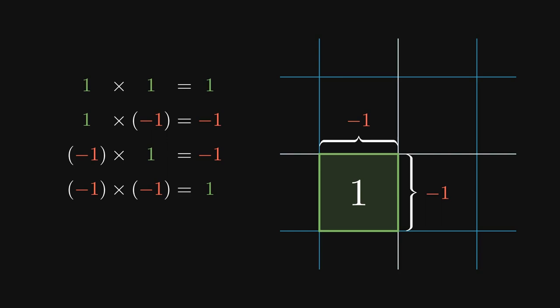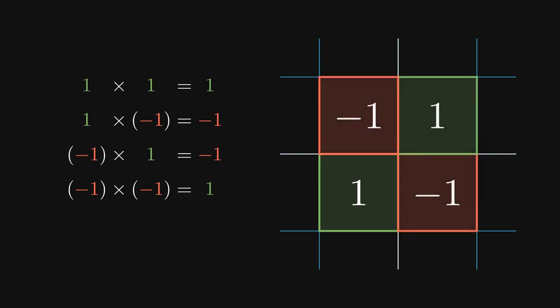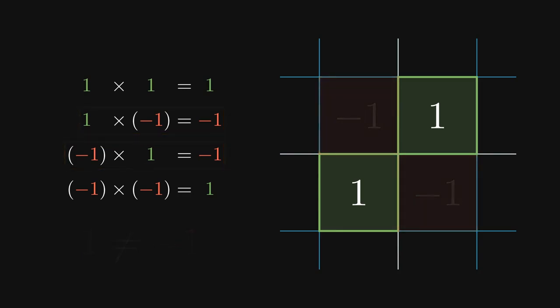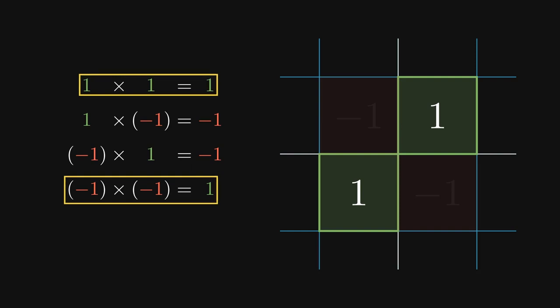We've seen different ways to obtain the area of a square. However, the two methods of obtaining a negative area have different bases and heights — they have different signs. But if we consider equal side lengths, we only get a positive area. So, is there really no way to obtain the square root of negative 1?